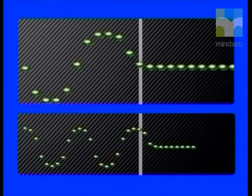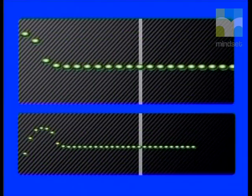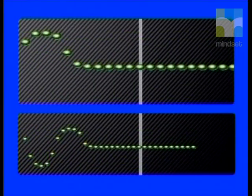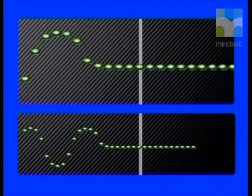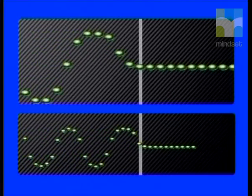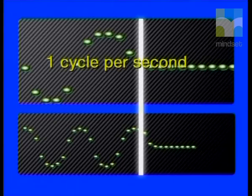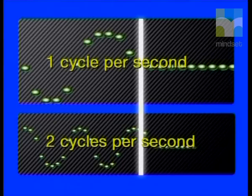Let's look at an animation to clarify this property. The white flash indicates that one second has passed. In the simulated wave at the top of your screen, only one vibrational cycle is completed in one second. But do you see that in the simulated wave at the bottom of the screen, two cycles are completed every second? We say that this wave has a frequency of one cycle per second, while this one has a frequency of two cycles per second.